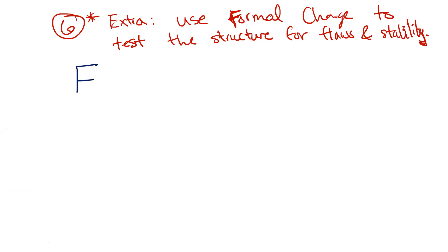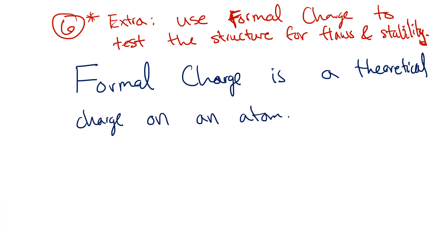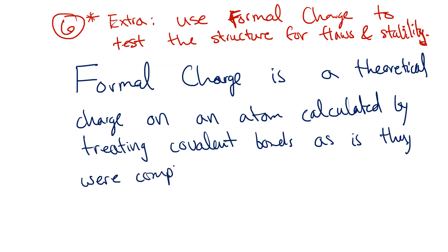Formal charge is a theoretical charge on an atom that you calculate by treating covalent bonds as if they were completely ionic.